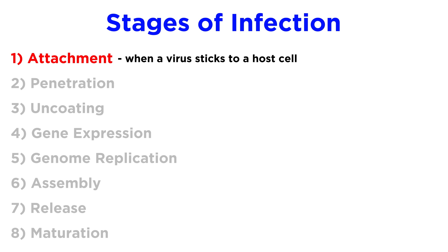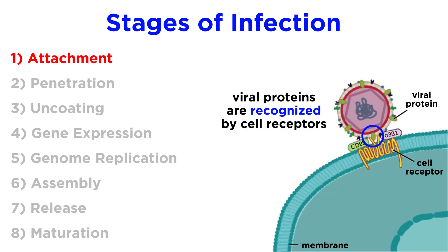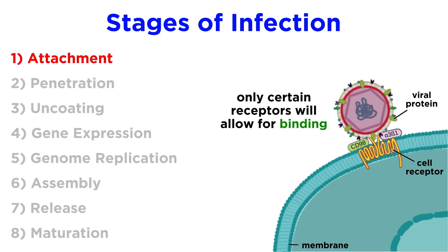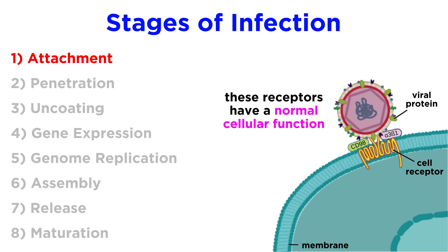Let's start with attachment, which refers to when a virus sticks to a host cell. Viruses use proteins or anti-receptors to attach in a highly specific manner to particular receptors on the surface of the host cell. If a cell doesn't have the right receptors that will allow for binding, it will be a nonproductive interaction. We should be aware that these receptors which the viruses bind to also have a normal function in the cell.